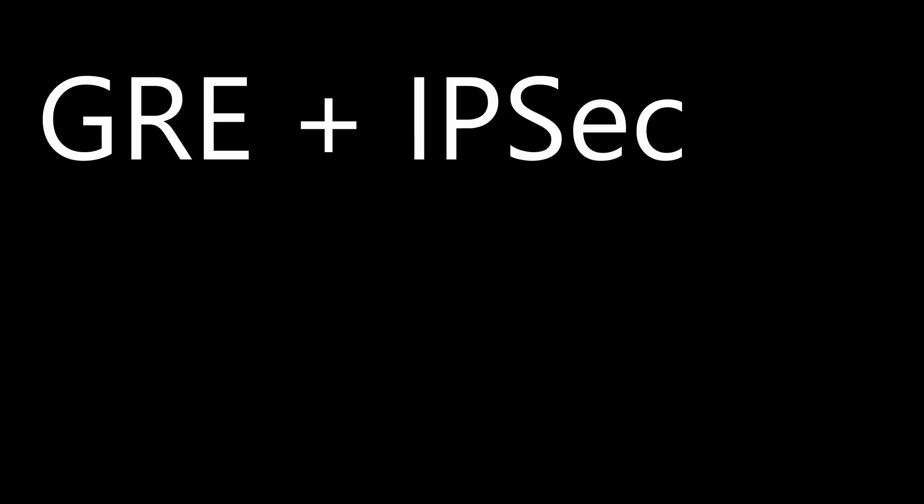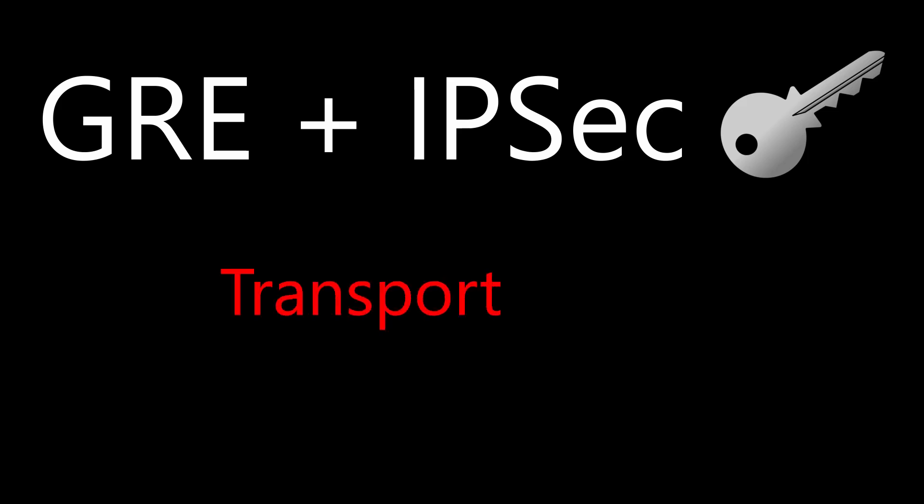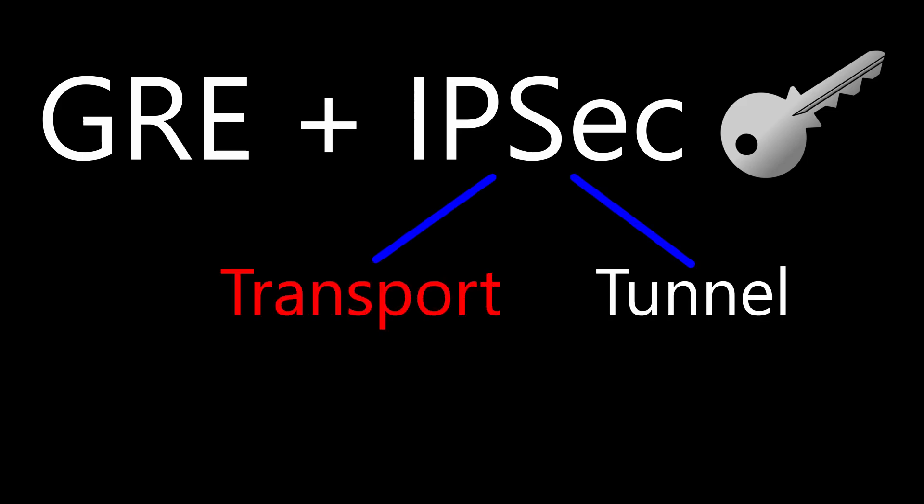If we want GRE tunnels to be secure, we add IPsec. This is critical when tunneling across the internet. IPsec can be used in two ways: transport mode and tunnel mode. We're interested in transport mode, as we already have a GRE tunnel.